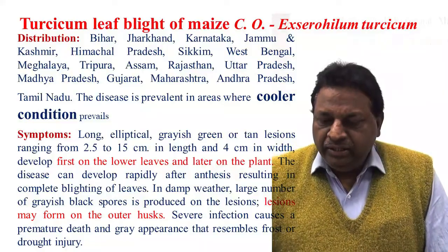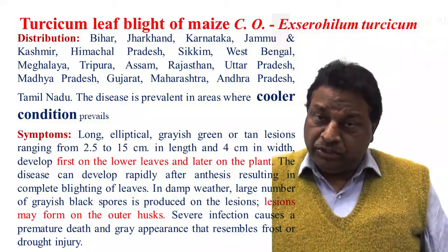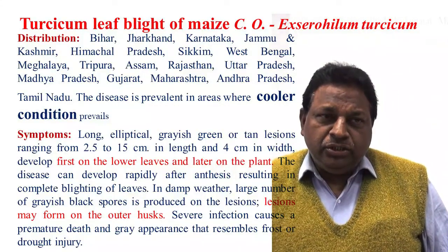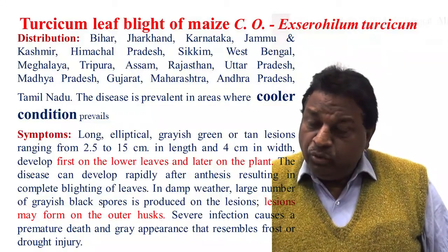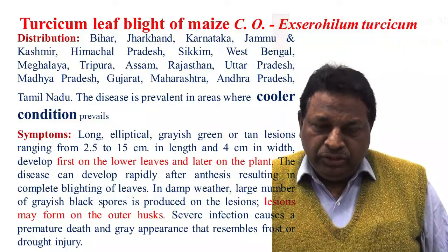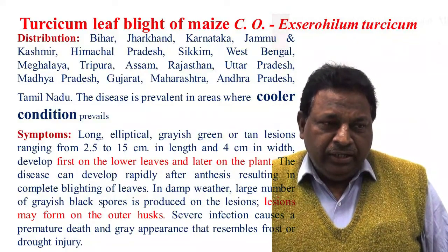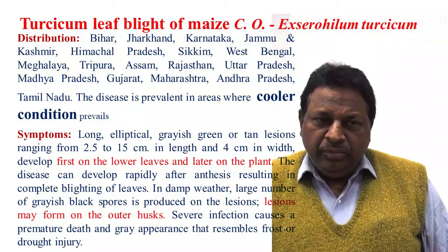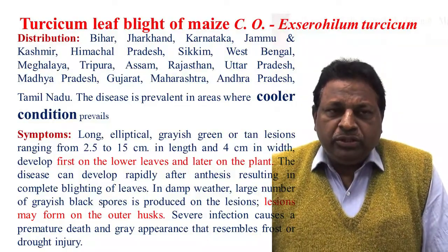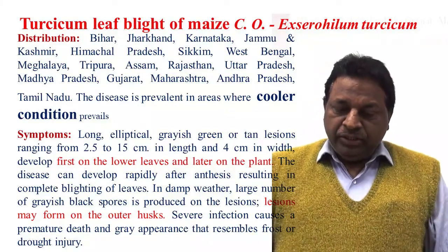This disease is very common in cooler areas, particularly Jammu and Kashmir, Bihar, and Himachal Pradesh. These are the areas where crops suffer severely due to Turcicum leaf blight.